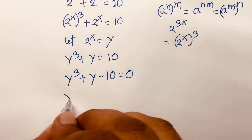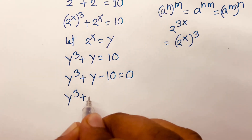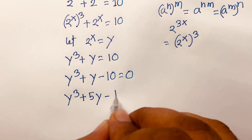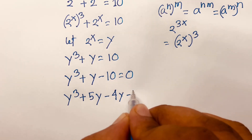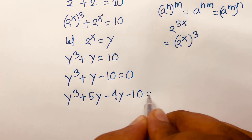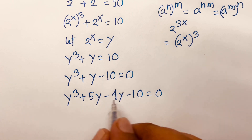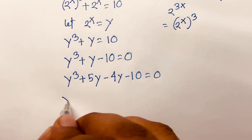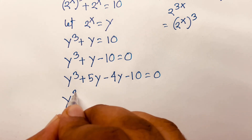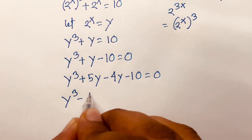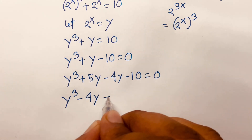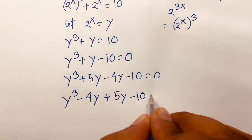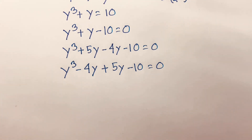I can say here is y cubed plus 5y minus 4y minus 10 is equal to 0. Note that 5y minus 4y equals plus y, confirming our equation. This rearranges to y cubed minus 4y plus 5y minus 10 is equal to 0.